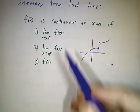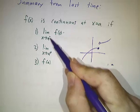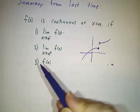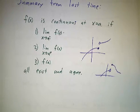A function is continuous if the limit of the function as x approaches a from below, the limit of the function as x approaches a from above, and the value of the function at x equals a all exist and they all agree.